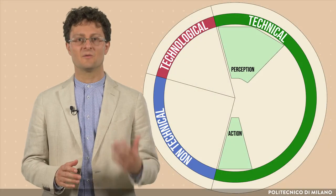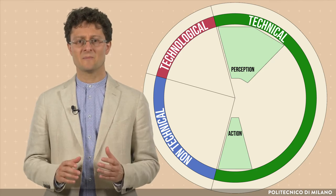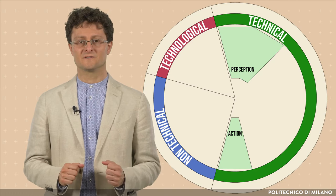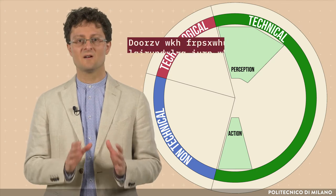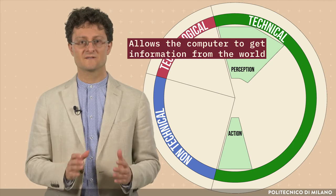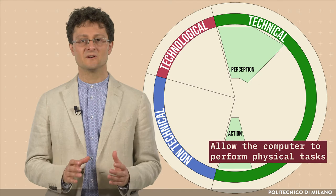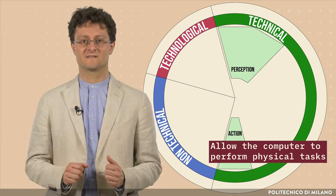Perception and action allow humans to interact with the physical world. This is what happens also in artificial intelligence. Perception allows the computer to get information from the world, to process and to understand it. Actions allow the computer to perform physical tasks.